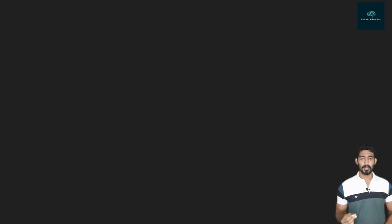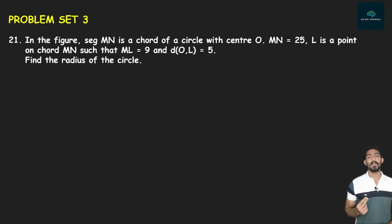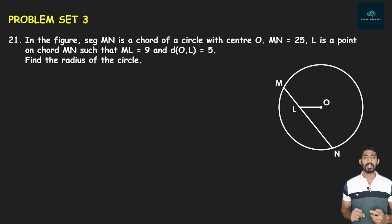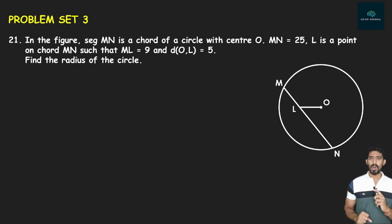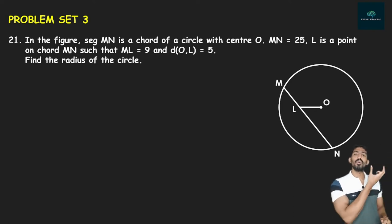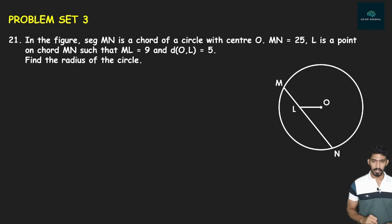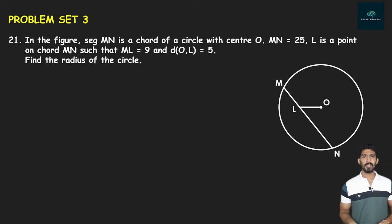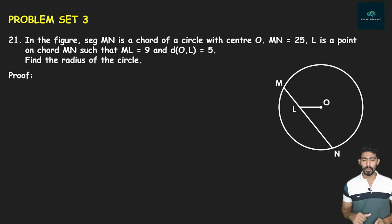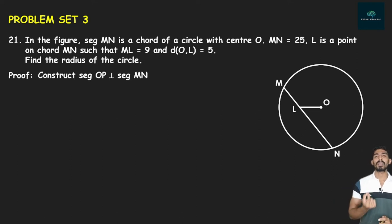Last question of this particular chapter — Problem Set 3, Question Number 21. In the figure, segment MN is a chord of a circle with center O. MN का value 25 है। L एक point है chord MN पे such that ML का value 9 है। OL का distance given है, और हमें radius निकालना है। Construction करना पड़ेगा — construct segment OP perpendicular to segment MN।